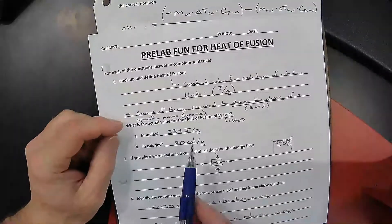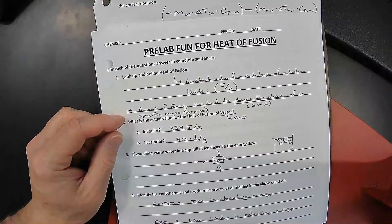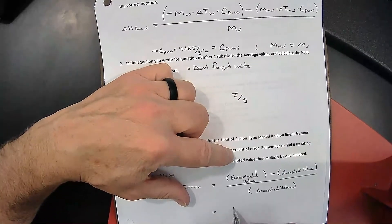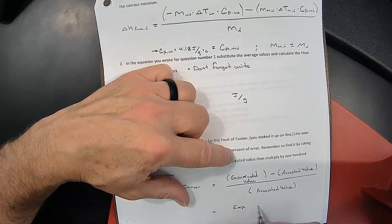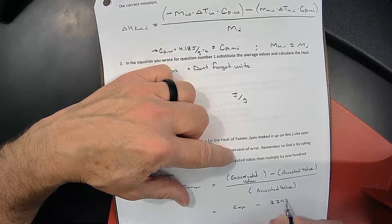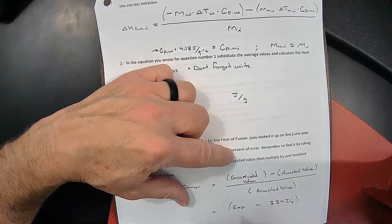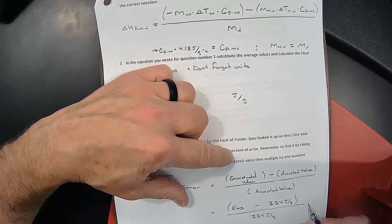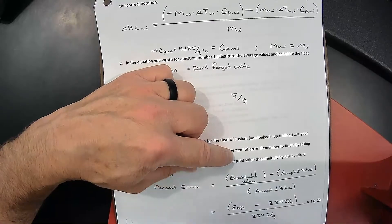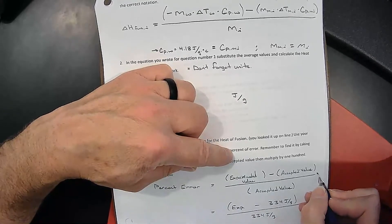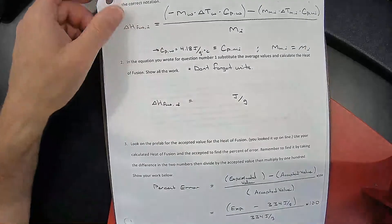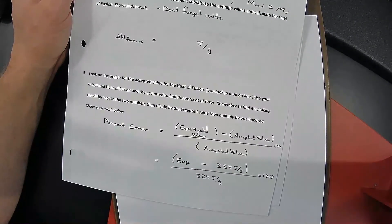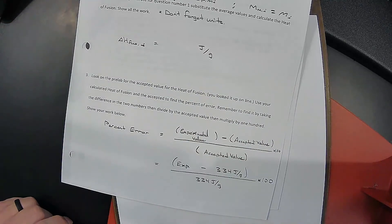So whatever your value is from your experiment, we will subtract that from 334 joules per gram. Once you do that, you divide by the 334 joules per gram, and then you multiply by 100 to get it into a percent. We're looking for under plus or minus 10% error.